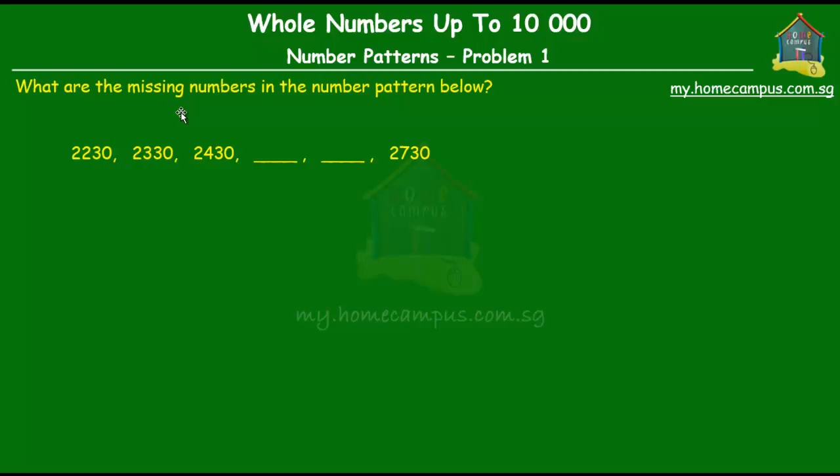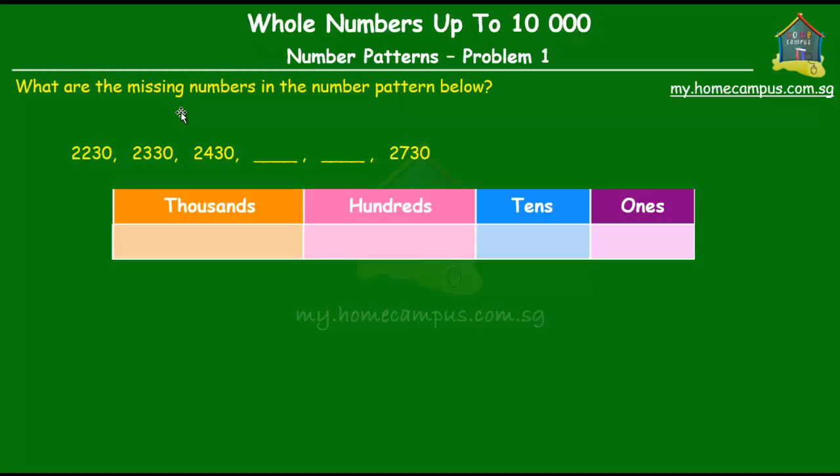So how do we solve it? Let's find out if there is a pattern in the numbers given to us first. We get our place value chart with the ones and the tens and the hundreds and the thousands and you start placing the numbers that are given to us.